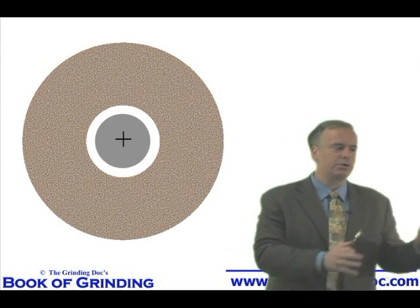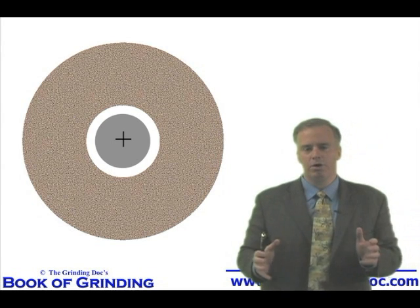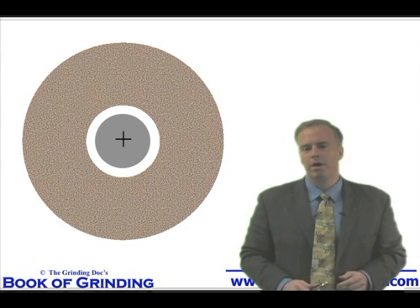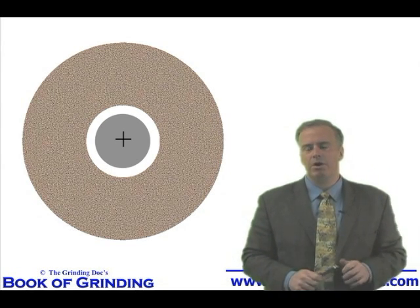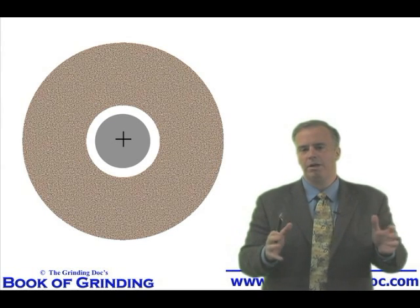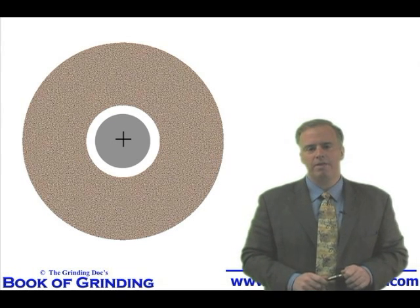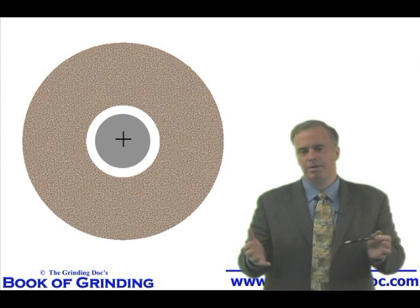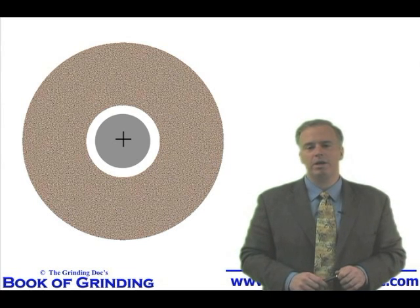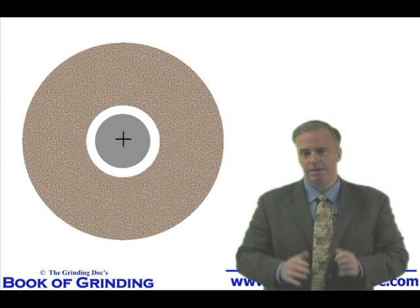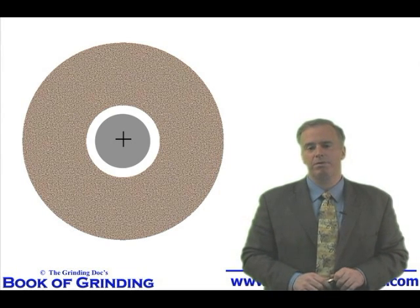But if you true your wheel on a separate truing station and then bring it over and stick it on the machine, no matter how hard you try, you're always going to have a little bit of play. And that play sometimes is big, sometimes is small, depending on how lucky you are when you mount it. That's why we use tapered spindles, basically to lock that in there and reduce that play.